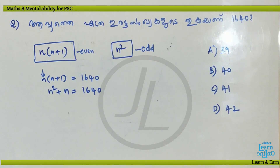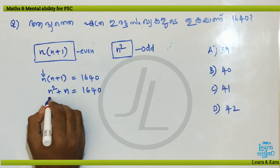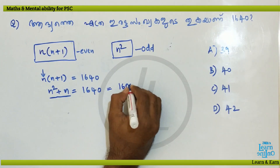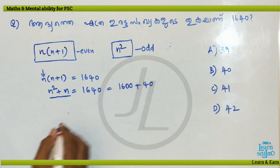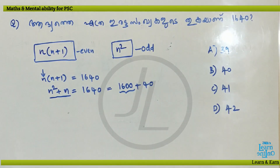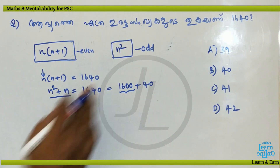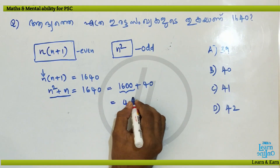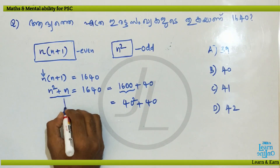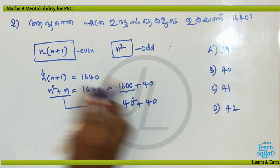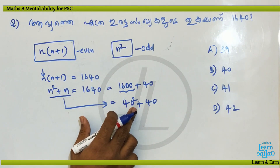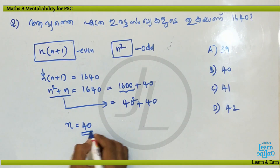We have to do a little bit of an equation. Let's say that we have n squared plus n. We have to multiply: n squared plus n is equal to 404040. That is option B.